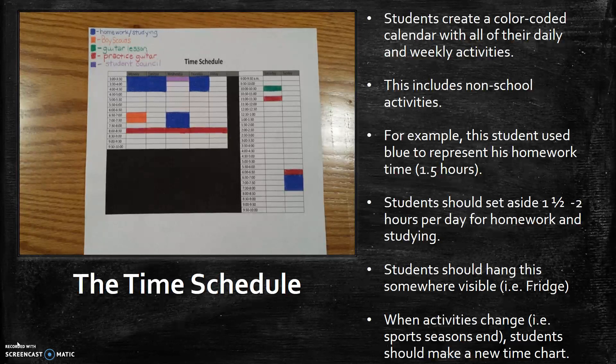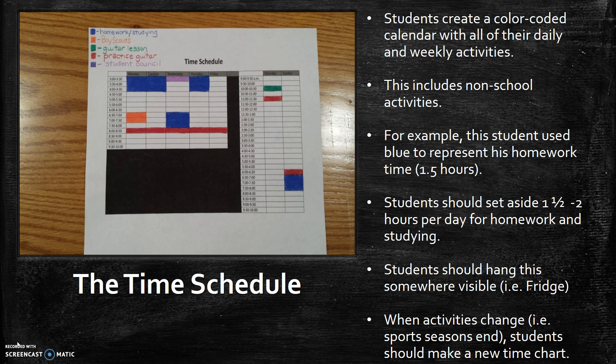And as you're going to see here these events are recurring events. If Brad had a dentist appointment this Friday he's not gonna put this on a time schedule. He's gonna put that in his planner but he's not gonna put this in his time schedule because that is not a recurring event.